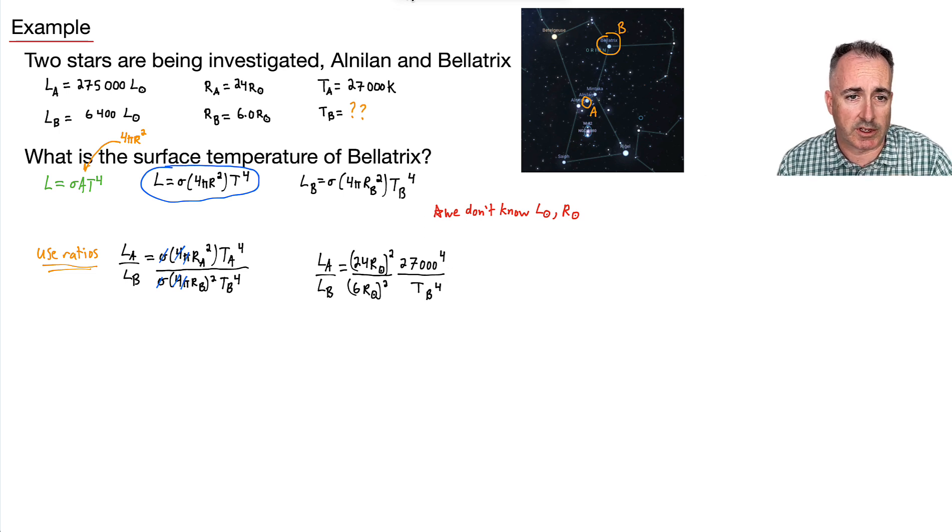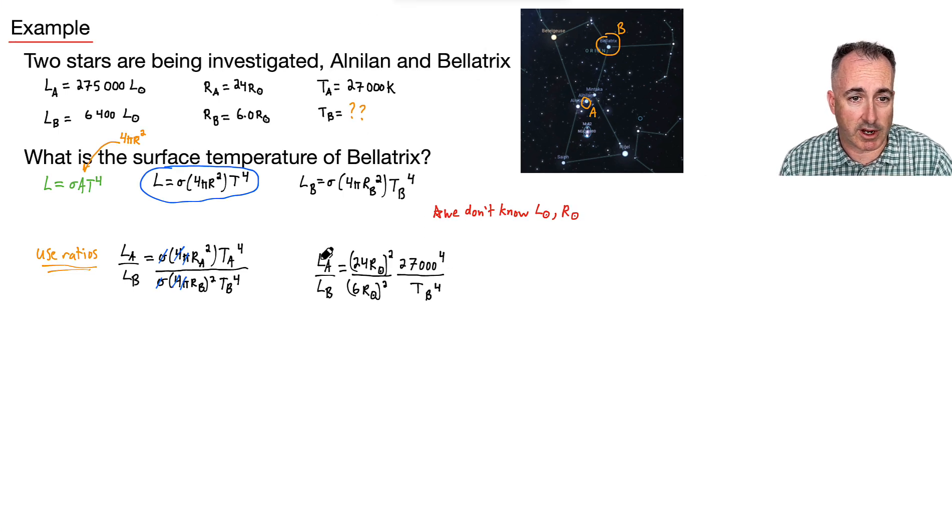Now this just becomes just a bunch of really ugly algebra, but we can do this. We can figure out actually, oh, we know LA, don't we? We know each of these. So we can say even further, we can say 275,000 L of the sun.